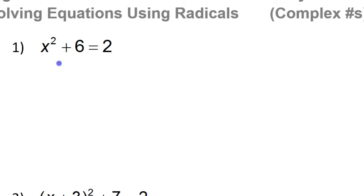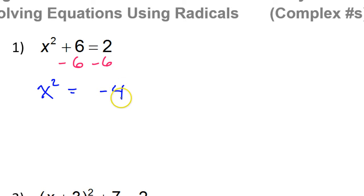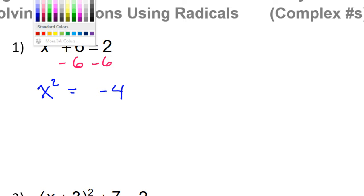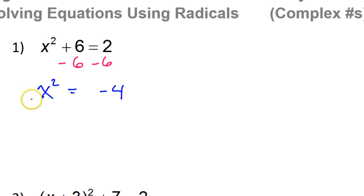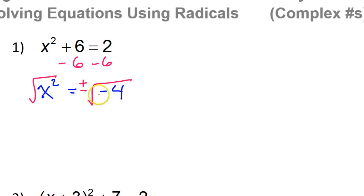For number one, you would subtract 6 from both sides. That's going to give you x squared is equal to negative 4. Then go ahead and take the square root of both sides. This is the type where you're going to need plus or minus — anytime you're taking the square root of both sides of an equation, your answer is going to be plus or minus.